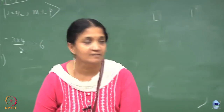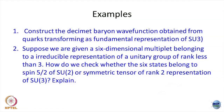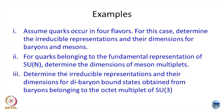So that is the question that was asked, and I have explained it on the board. Given a 6-dimensional multiplet belonging to an irreducible representation of a unitary group of rank less than 3, how do you check whether it belongs to spin-5/2 of SU(2) or the symmetric tensor of rank 2 of SU(3)? — depending on whether you can achieve all states using only J+ and J-, or whether you need the other 4 generators. Now, the next question: just as we did rotations in 3 dimensions and then went to abstract notation for rotations in arbitrary n-dimensional space, we will now extrapolate from SU(2) and SU(3) to SU(4).